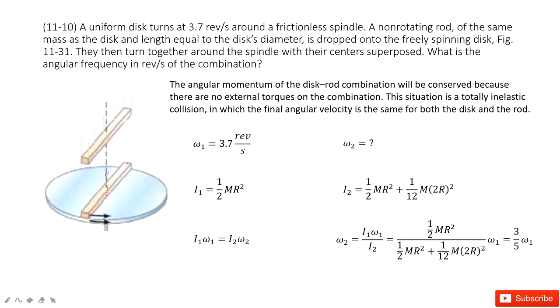Now we consider angular momentum is conserved. Initial angular momentum equals final angular momentum. So we solve this equation. We get the function for omega 2 and input the known quantities. We can find the answer.